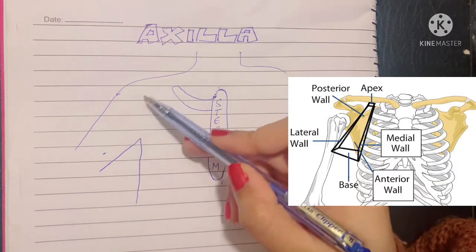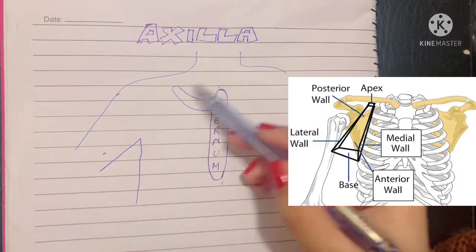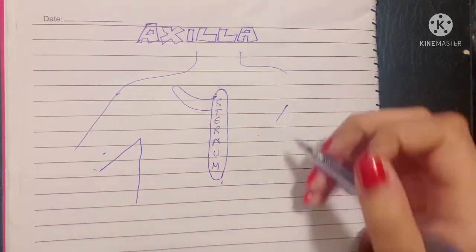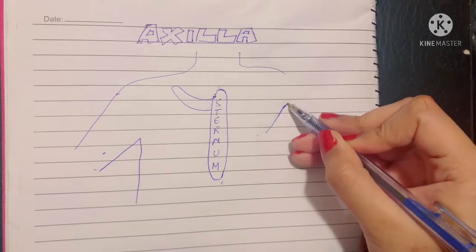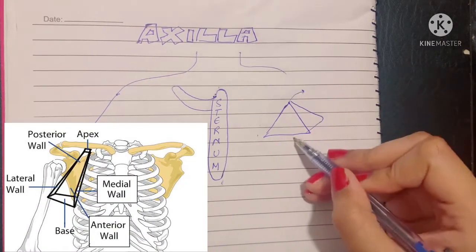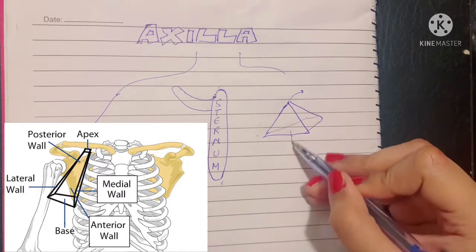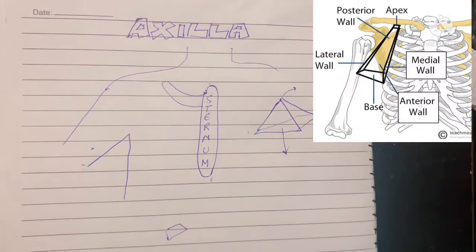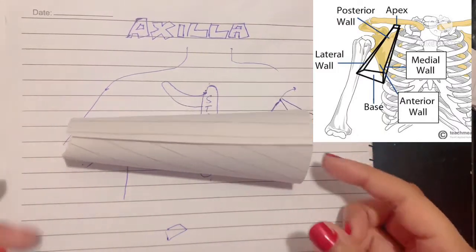Now, this is a pyramidal-shaped space. It resembles the shape of a pyramid. It has an apex, it has a base that is just below the pyramid, and it has four walls.